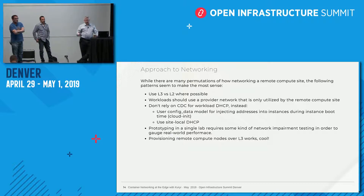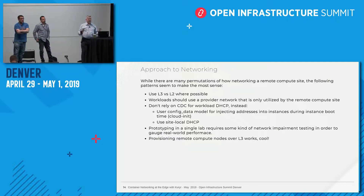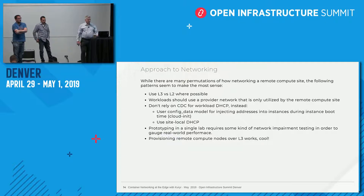You can inject through config data or have a site-local DHCP if you want to use DHCP. A number of edge workloads come pre-configured and prefer static IP addressing on a flat network with fewer moving parts. Some edge deployments actually prefer not having DHCP at all.